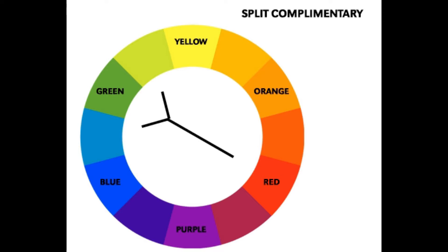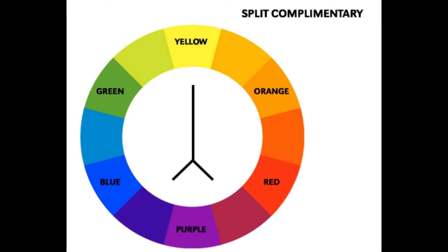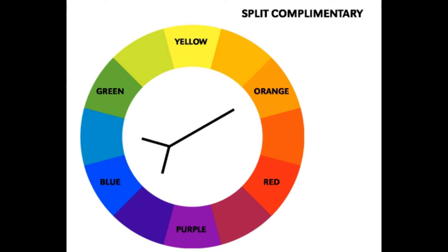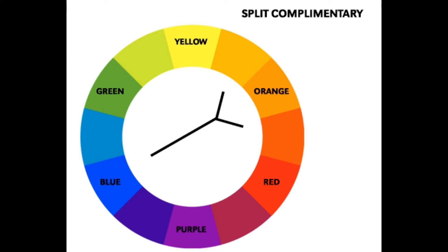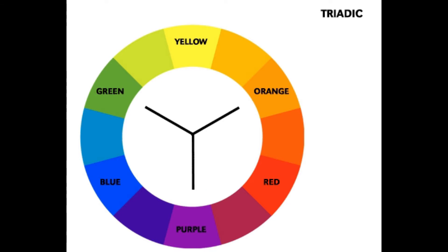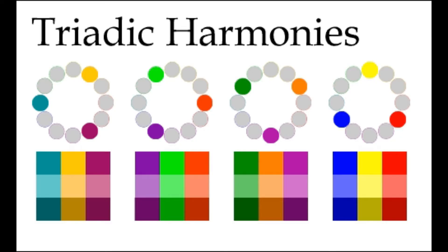Split complementary scheme: this scheme consists of one color used together with the two colors that flank its complement on the color wheel, giving a total of three colors. For example: yellow, blue-purple, and red-purple (purple is yellow's complement); red, yellow-green, and blue-green (green is red's complement); and purple, yellow-green, and yellow-orange.